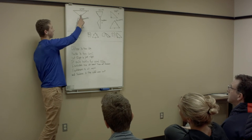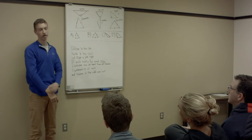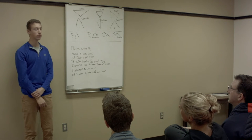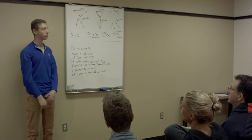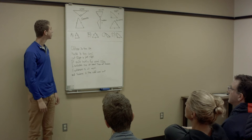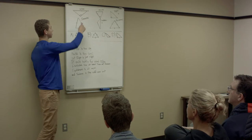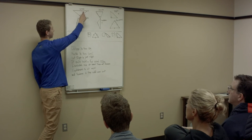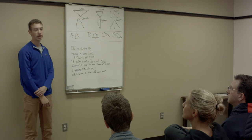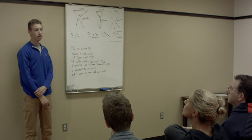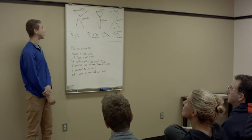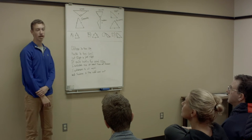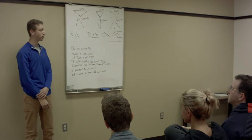Jennifer, what do you notice about the angle right here on this triangle? That angle that has a circle in it is bigger than the other two angles. Right, so this angle seems much bigger than the other two angles and that's because it's greater than 90 degrees. So this is an obtuse triangle because it has one angle that is greater than 90 degrees.